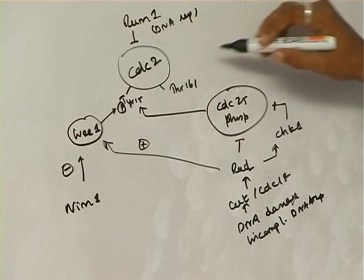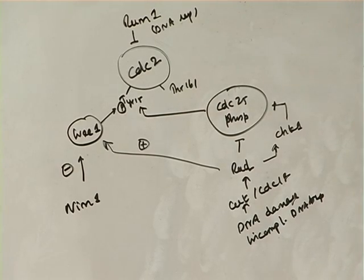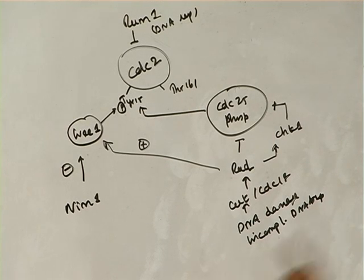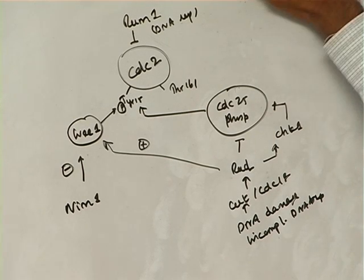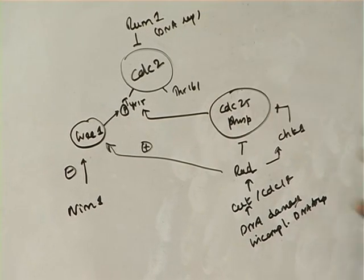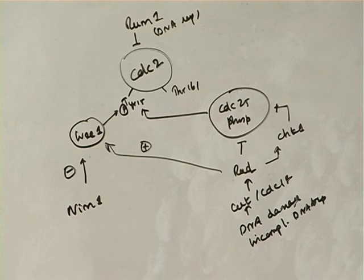But this is the control of CDC2. So the CDC2 is blocked by different checks here. But what we have to know is, in the case I told, in the case of G2, there is a spike of activity of CDC2 along with cyclin A and B. How is this spike formed?